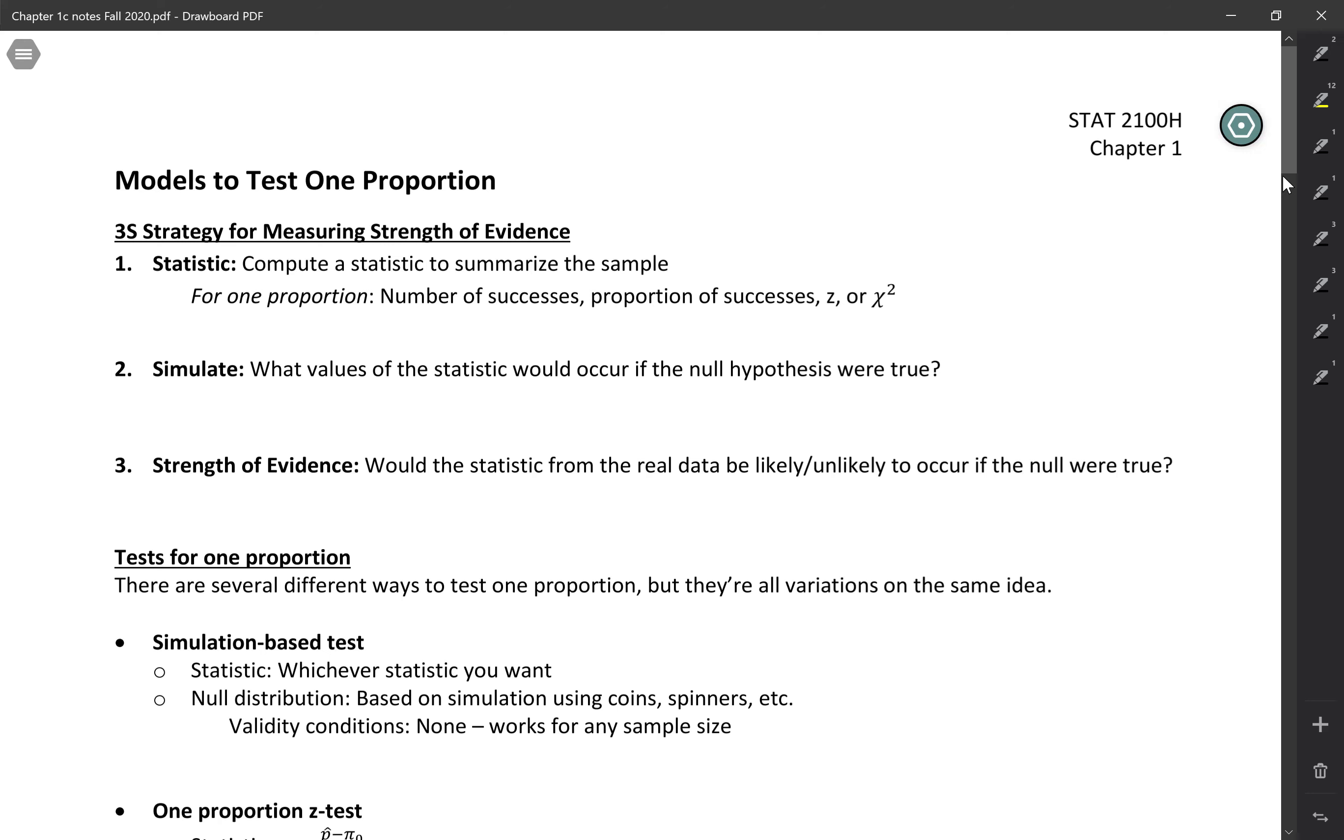If we think of the 3S strategy, we start off by calculating a statistic to summarize the sample. We're dealing with one proportion, so that could be number of successes, proportion of successes, z, or a new statistic we're going to learn today called the chi-squared, but all of these are the same in the way that they're a statistic that can be used to summarize the sample.